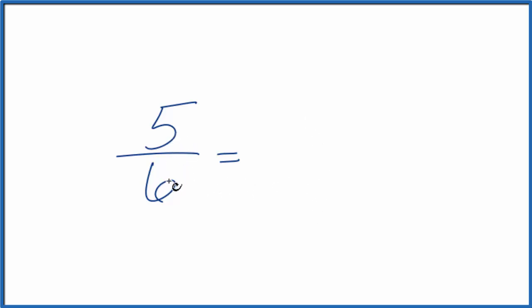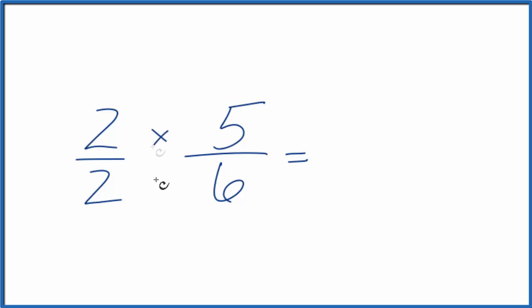We could just multiply 5/6 by 1. That would give us the same value. But instead of 1, let's write it as 2 over 2. 2 divided by 2, that's still 1, but now 2 times 5 is 10, and 2 times 6 is 12, and now we have an equivalent fraction for 5/6. 5/6 is equivalent to 10/12.